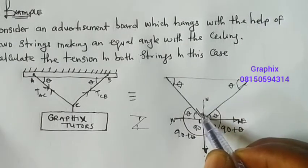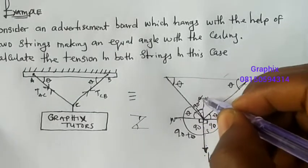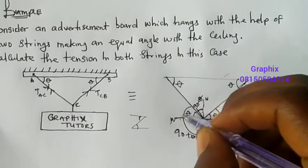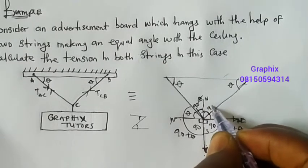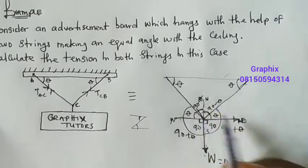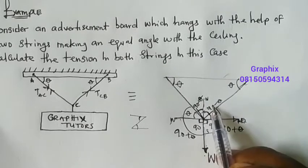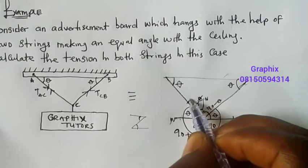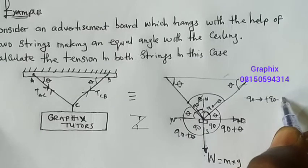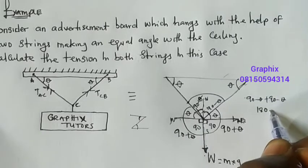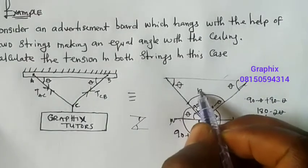We also know the angle between North and West is 90. So if I want to get the angle at this point here, it will be 90 minus theta. Similarly, the angle between North and East is 90, so that angle is also 90 minus theta. Adding these two together: 90 minus theta plus 90 minus theta equals 180 minus 2 theta. So the angle here is 180 minus 2 theta.